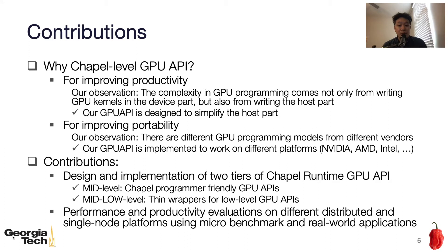Our contributions are as follows. We design and implement two tiers of Chapel-level runtime GPU API. The mid-level provides Chapel programmer-friendly GPU API, whereas the mid-low-level provides thin wrappers for low-level GPU APIs. We also perform performance and productivity evaluation on different distributed and single-node platforms using microbenchmarks including real-world applications.